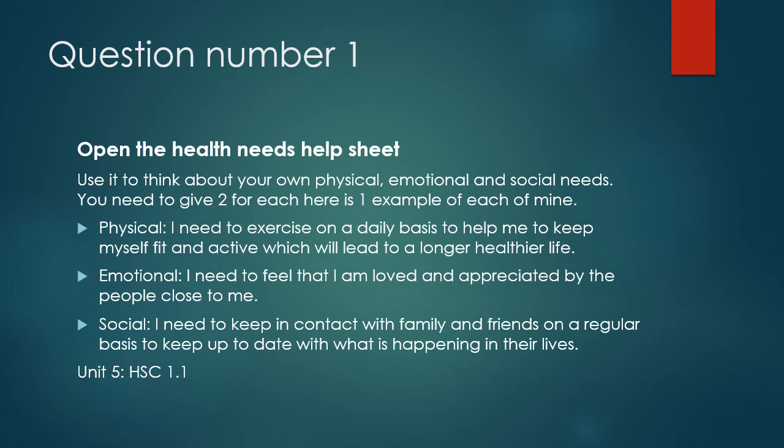My emotional need is that I need to feel loved and appreciated by the people close to me. I'm married, I've got two children and a granddaughter and two daughters-in-law, and I feel loved by them. My social need is that I need to keep in contact with my family and friends on a regular basis to keep up to date with what is happening in their lives. I want you to think of two for each category, write it in your workbook, and sign and date the page once you've finished.